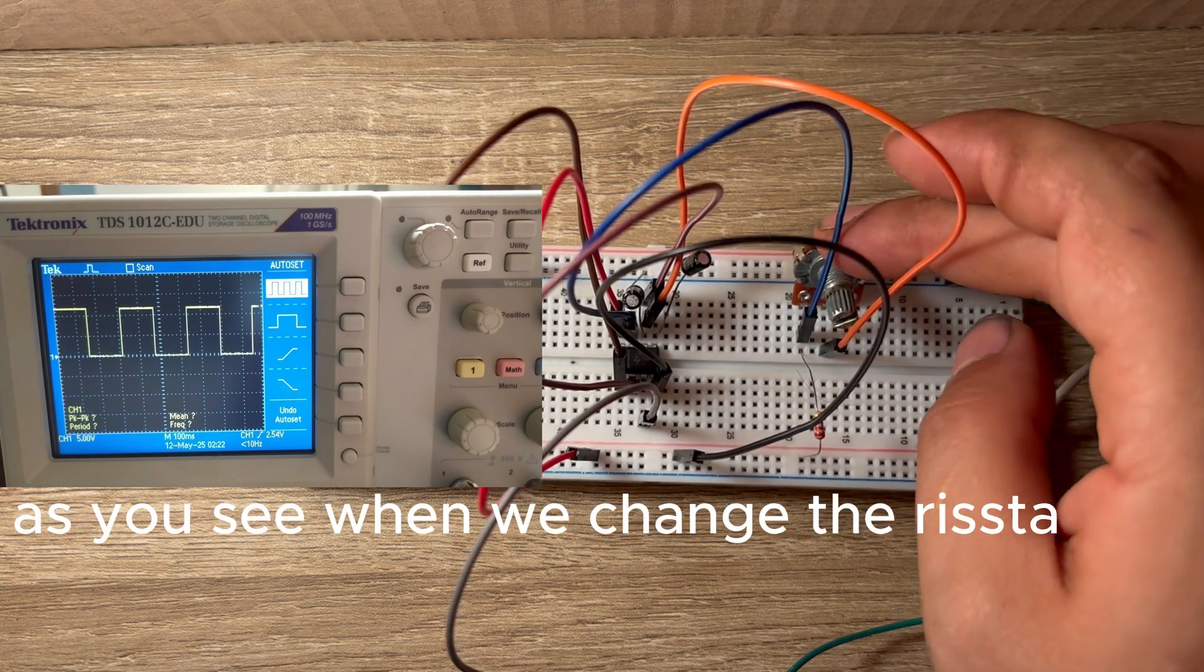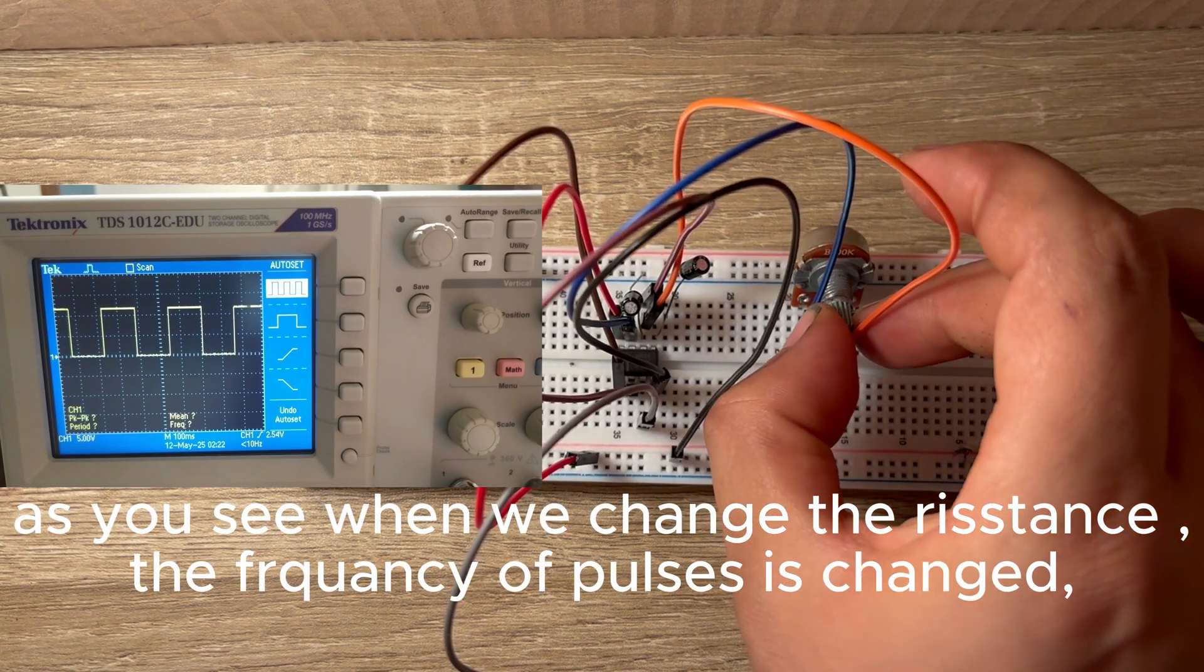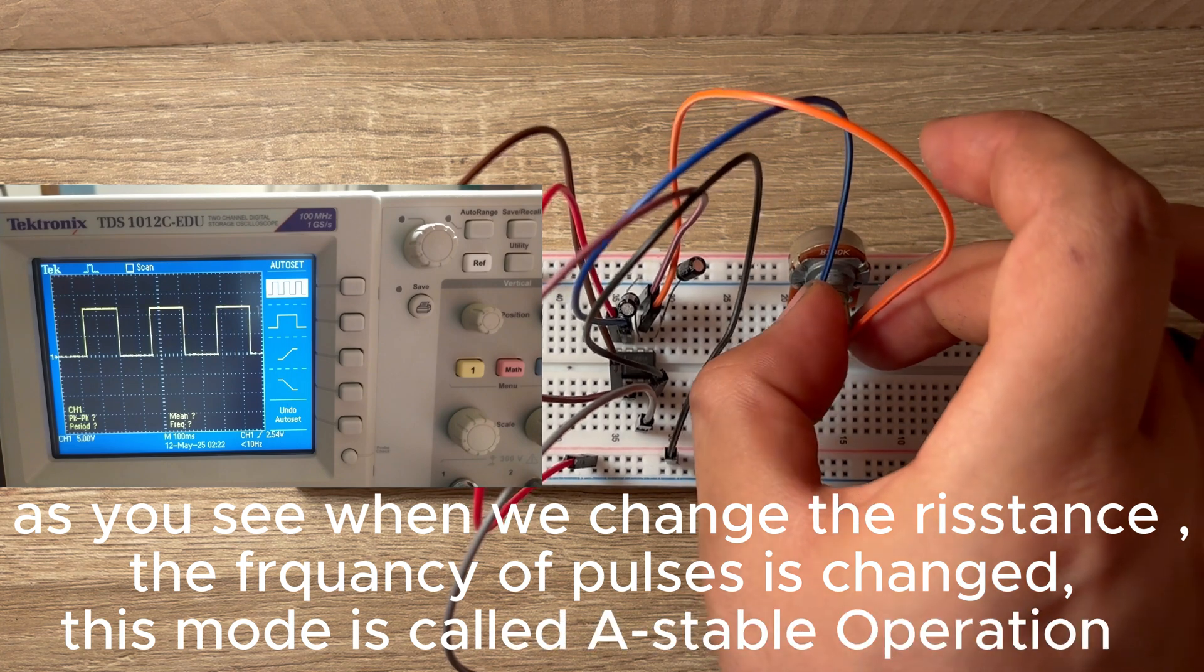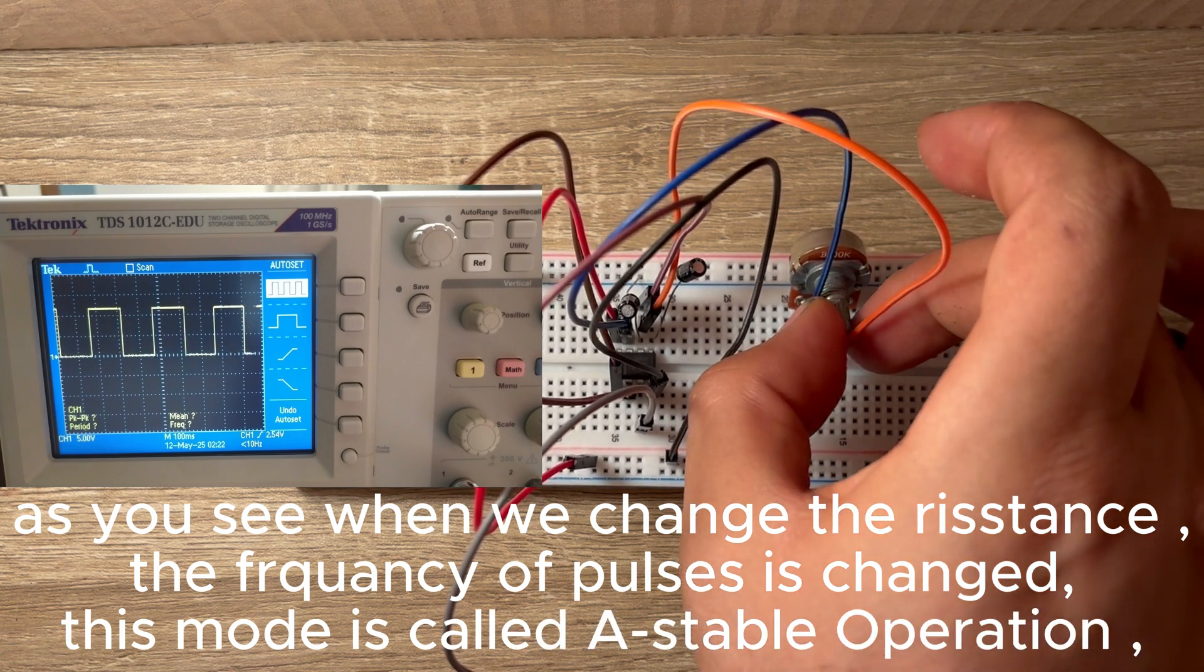As you see, when we change the resistance, the frequency of pulses is changed. This mode is called astable operation.